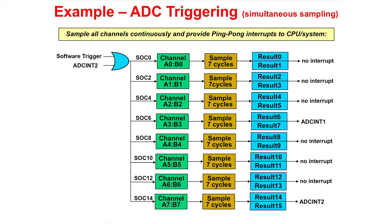The example on this slide shows channels 0 through 7 being converted in simultaneous sampling mode triggered initially by software. After channel 3 is converted, ADCINT1 is generated. After channel 7 is converted, ADCINT2 is generated and fed back to start the process again. ADCINT1 and ADCINT2 are being used as ping-pong interrupts.